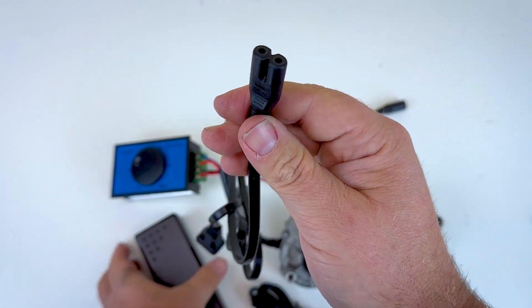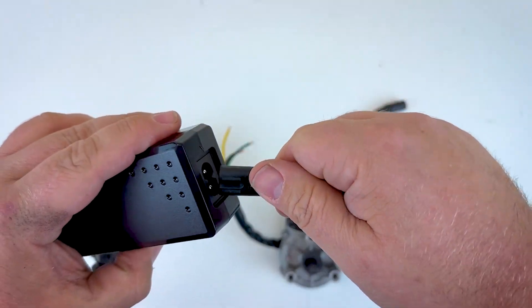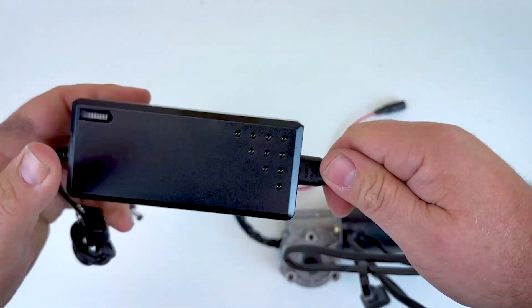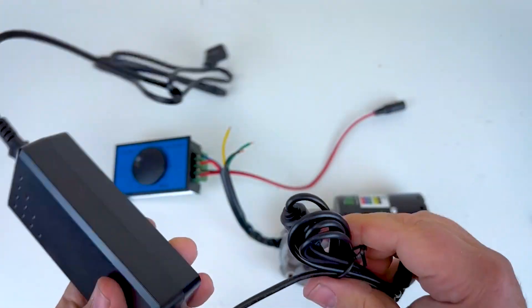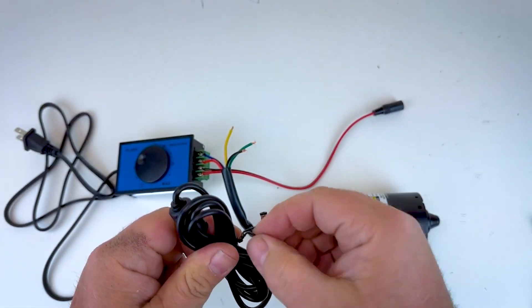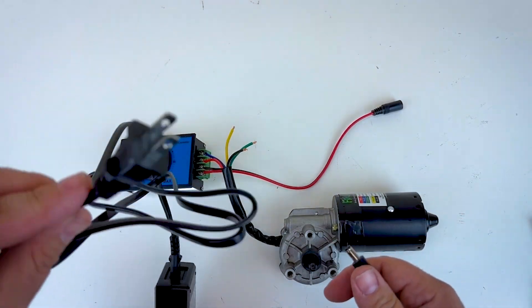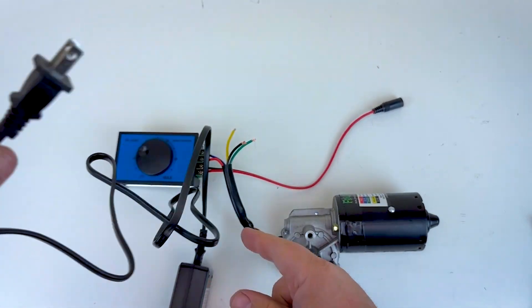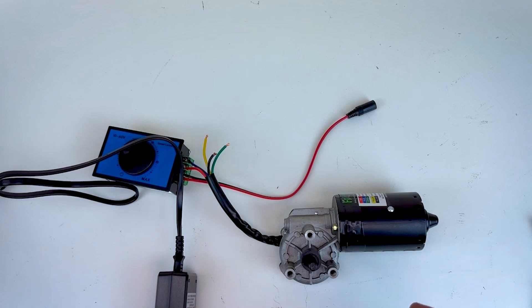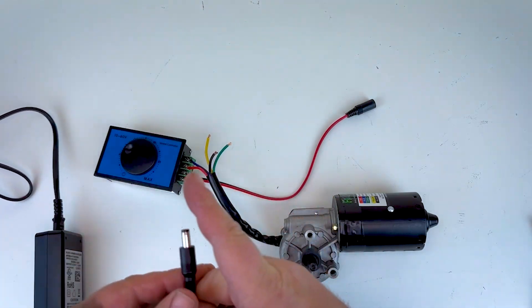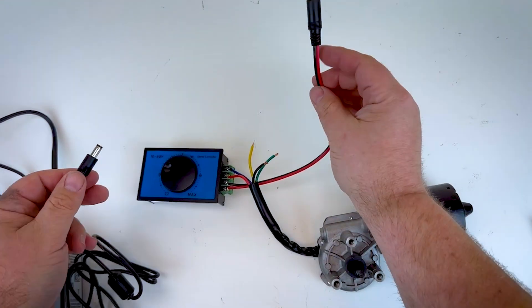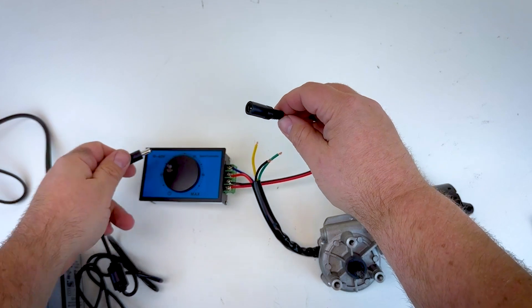We'll plug the power cable itself into the power brick here. Make sure to push it in all the way. We can undo the twist tie on this end here. And then we'll go ahead and plug this in to our wall socket here off screen. And then we can plug in the power supply to the speed controller.